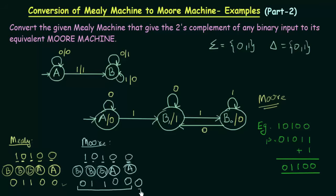There is one extra bit produced by the Moore machine. So we cannot say they are exactly the same — the Mealy machine and Moore machine are not producing the exact same result. This is because the Moore machine always gives an extra bit at the output, since there is an output associated to the starting state which is given even before it gets any input. If you want to make them exactly similar, you can just ignore this extra bit from the Moore machine. Here we have successfully converted the Mealy machine that gives 2's complement as output to its equivalent Moore machine.